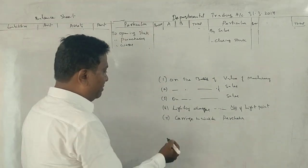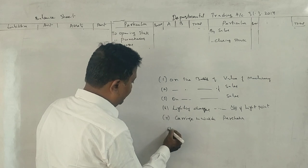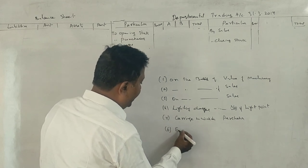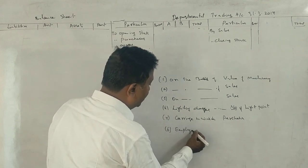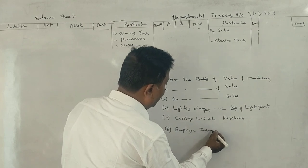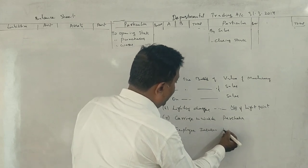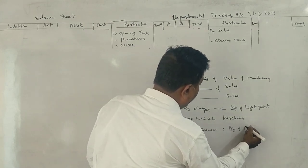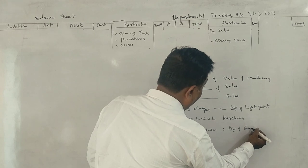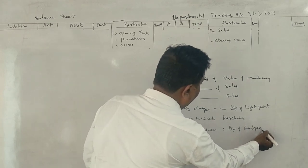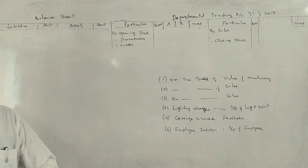Employee insurance is allocated on the basis of the number of employees. Employee insurance — number of employees is the correct basis. This is based on the marks for the question. Is it clear?